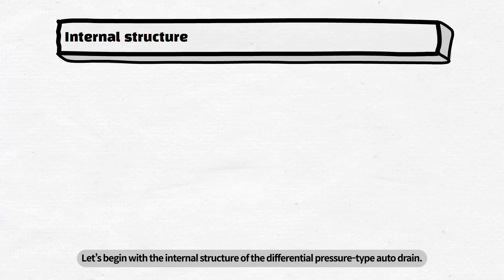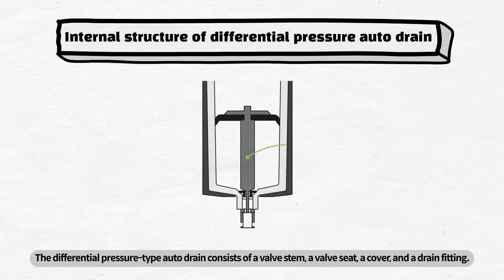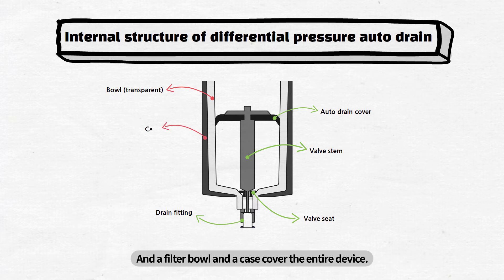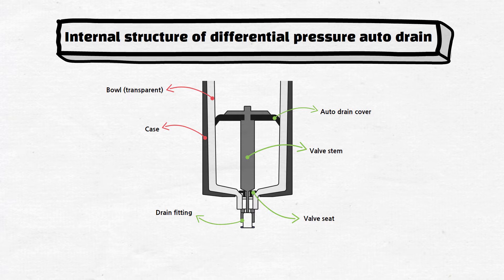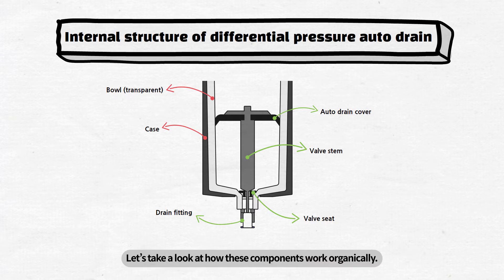Let's begin with the internal structure of the differential pressure type auto drain. It consists of a valve stem, a valve seat, a cover, and a drain fitting. A filter bowl and a case cover the entire device. Let's take a look at how these components work organically.